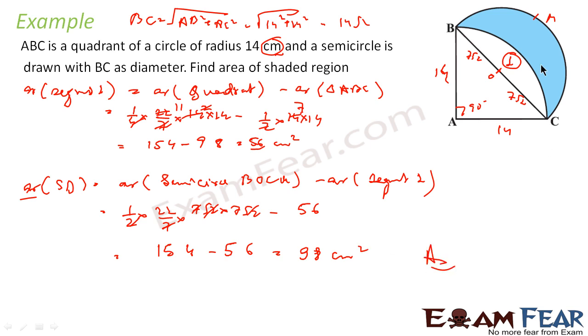Not that difficult — you just have to think a little bit. To find the area of the shaded region, you get the area of the semicircle and subtract the area of the segment to get the area of the shaded region.